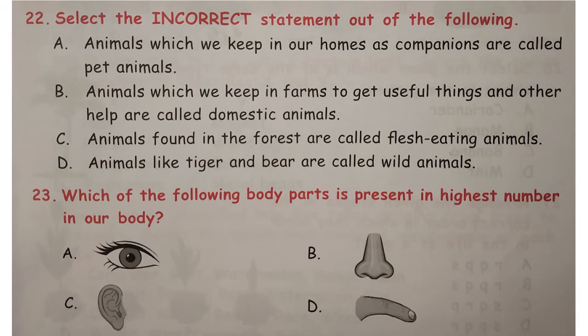Select the incorrect statement out of the following. The correct answer is option C because animals found in the forest are called wild animals. They can be grass-eating animals or flesh-eating animals.